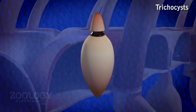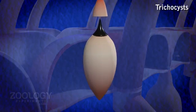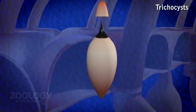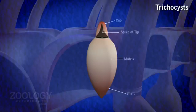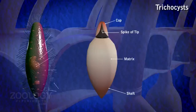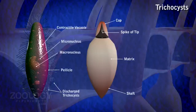Each trichocyst consists of an elongated shaft and a terminal-pointed tip called the spike, covered by a cape. It is believed that these discharge and anchor the animal to a firm substratum when it feeds upon bacteria. It is also believed that these are organelles of defense.